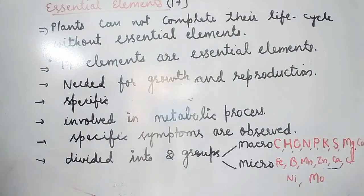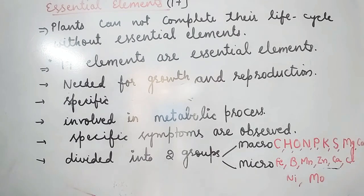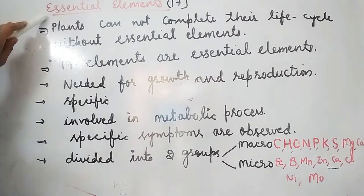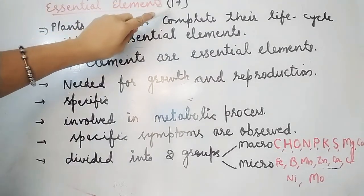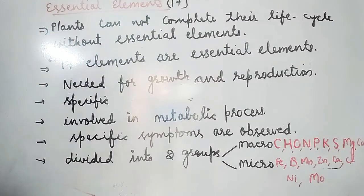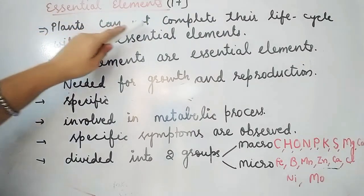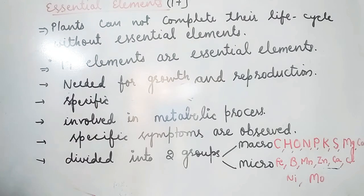Hello everyone, today we will be talking about an important chapter: Mineral Nutrition. Plants need minerals more than human beings and animals. Out of 105 elements, 60 elements are important for plants. There are 17 elements that are categorized as essential elements, because plants cannot complete their life cycle without these elements.